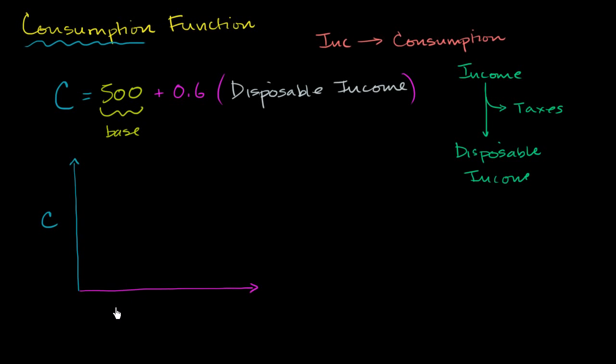And so if there is zero disposable income, I'll draw a little table right over here. If I have zero disposable income, then this whole term right over here is zero. And then you have $500 billion, or whatever our units are, of base consumption. And that would correspond to this point right over here. In the horizontal axis, you don't move at all, because it's zero. Vertical axis is 500.